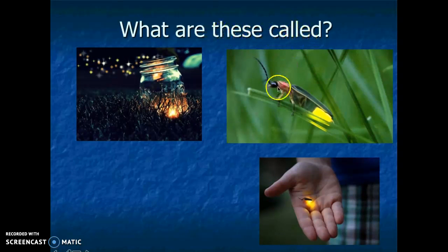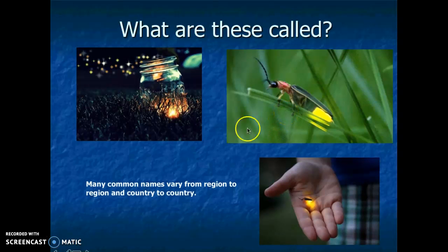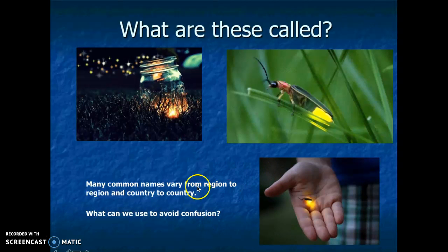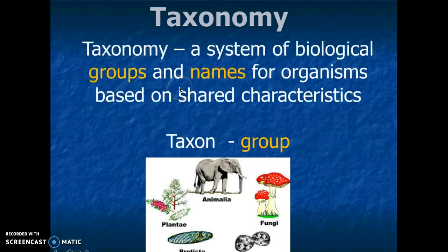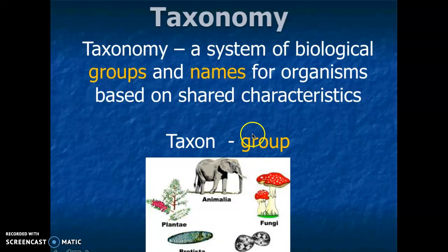Here's just another example. What are these called? A lot of people call them light bugs or fireflies. There are many names and they're going to vary from region to region, country to country, but the idea is that by using a common name, this is going to bring a lot of confusion. You basically have a scientific name that is going to be used for everybody, and we normally use a Latin name for this. So taxonomy is the system of biological groups and names for organisms based on shared characteristics. Whenever we say taxa or taxon, we're basically talking about groups — taxa is the plural, taxon is the singular.